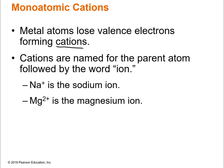The way that we name cations is using the parent atom. So if the name of the element is sodium — Na — then Na+ would be the sodium ion. If you have Mg2+ and you want to name it, the name of the element is magnesium, and then you just put the word ion. So it's element name plus the word ion.